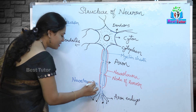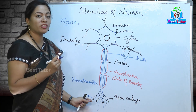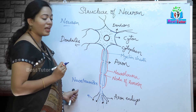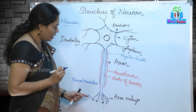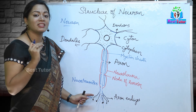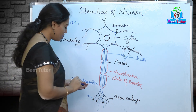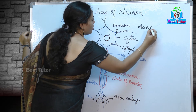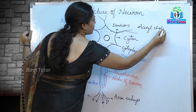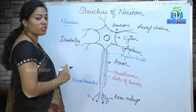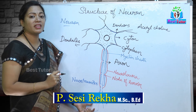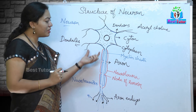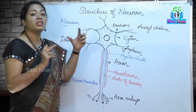Neurotransmitters are the ones which are going to transmit something from one neuron to another — that is why the name neurotransmitters. The substance secreted by these axon endings is acetylcholine. Acetylcholine is a neurotransmitter produced by the axon endings that transfers the impulse from one neuron to another.